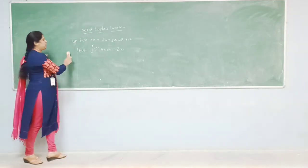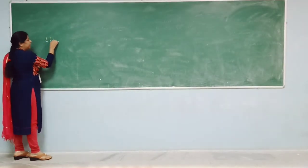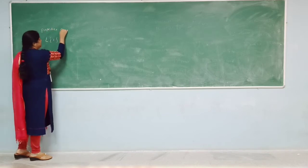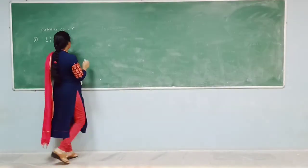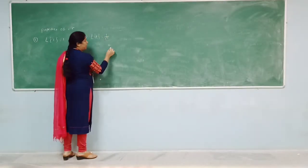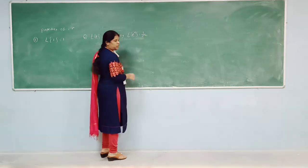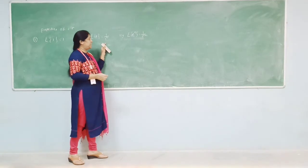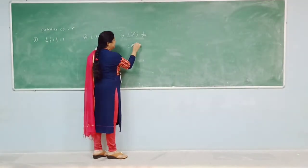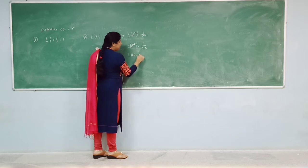We have some properties of Laplace transform. The first property is L{1} = 1/s. The second property is L{t} = 1/s². Similarly, L{tⁿ} = n!/s^(n+1). And L{e^(at)} = 1/(s − a). Also, L{k} = k/s.